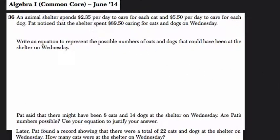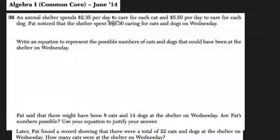So in this problem, an animal shelter spends $2.35 per day to care for each cat and $5.50 per day to care for each dog. Pat noticed that the shelter spent $89.50 caring for cats and dogs on Wednesday.